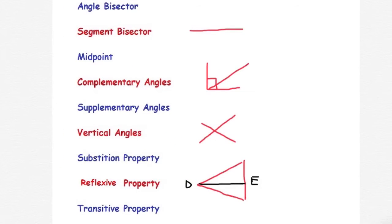Segment bisector means we are splitting it right down the middle, and both sides are equivalent.